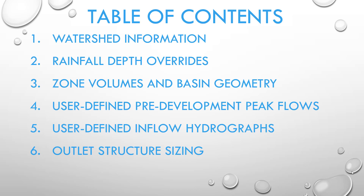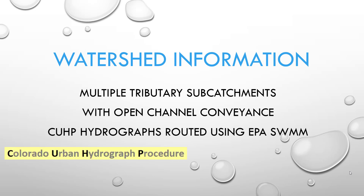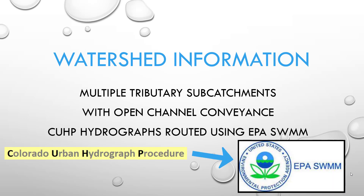The video is broken into several chapters, as seen here in the table of contents. If you move the cursor over the video timeline at the bottom of the screen, the various chapter segments are visible. In this example, we are going to evaluate a watershed that was broken into three tributary subcatchments based on different land use characteristics and an open channel conveyance system. Runoff hydrographs for the three individual subcatchments were generated using CUHP for the two-year through 500-year design storms. The hydrographs were then routed through open channels using EPA SWMM to determine the combined inflow hydrographs for each design storm at the proposed detention basin location.